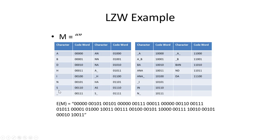Why did I choose bit width five and not four or three? Three was bad because we'd have only single characters — no savings. With four bits we'd cut off the directory earlier, and we'd lose the ability to encode 'ana' as three characters at once. I've chosen five because I believe it's the sweet spot for this example — the bit width giving the best compression. I leave it as an exercise to try different bit widths and check.